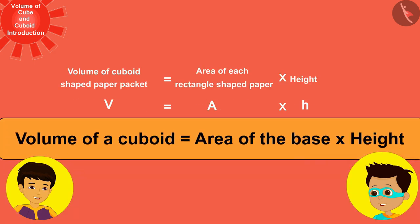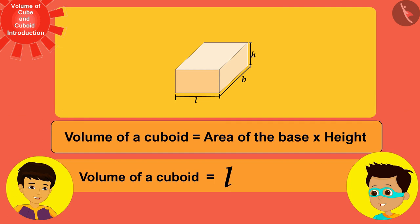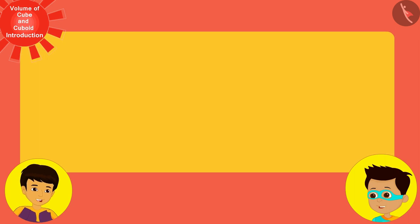We can measure the volume of any cuboid as the area of its base multiplied by its height, or in other words, we can write it as the product of its length l, breadth b, and height h.